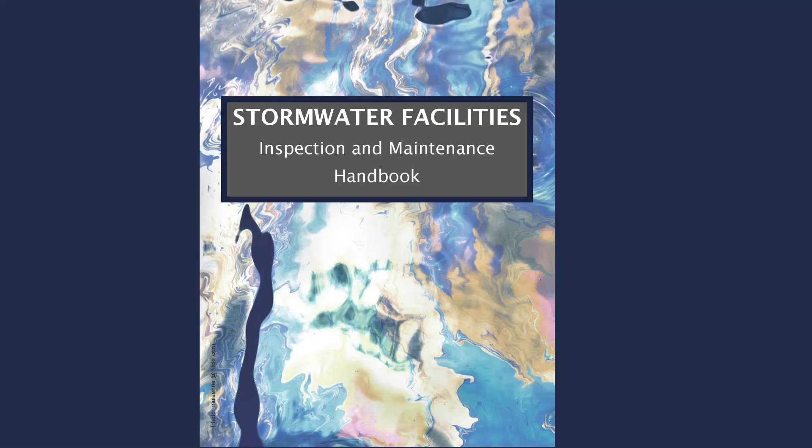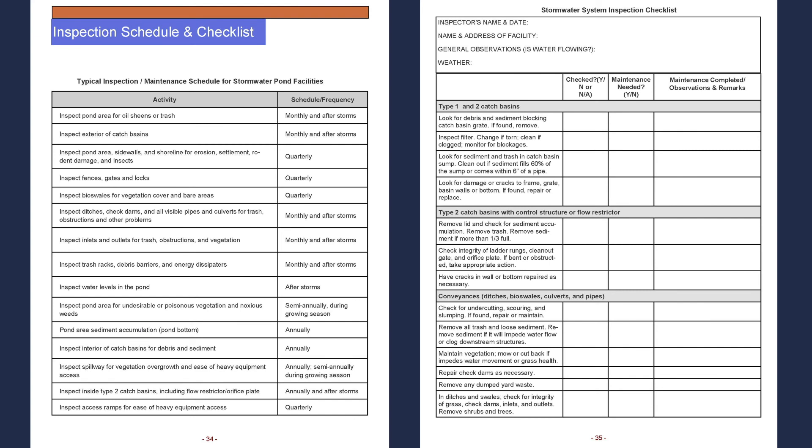We understand that this is a lot of information to remember, so we've put together a free stormwater manual that you can reference at any time on our website. The manual also includes an inspection schedule and checklist which you can use to help keep track of your inspections and maintenance. If you have questions or would like free assistance, please reach out to us. We can help you find copies of important documents that will support your understanding of your system and your responsibilities as the owner.